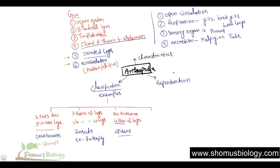Then there are some examples where they have many pairs of legs and a segmented body with legs on each segment. Examples are centipedes and millipedes. These are all the different types of arthropods, and the arthropoda is actually the biggest phylum of invertebrates.